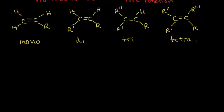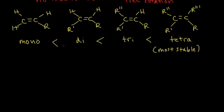The question is: which of these four alkenes is the most stable? The tetrasubstituted alkene is the most stable. The more substituents — the more alkyl groups — the more stable the molecule. So the order is: tetrasubstituted is most stable, followed by trisubstituted, then disubstituted, and monosubstituted is the least stable. These alkyl groups allow delocalization of electron density, which stabilizes the molecule. The full explanation involves quantum mechanics and is very similar to hyperconjugation, which will be discussed in the video on carbocations.